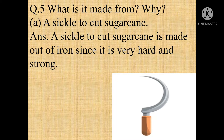Question 5: What is it made from? A) A sickle to cut sugarcane. Answer: The sickle to cut sugarcane is made out of iron, since it is very hard and strong.